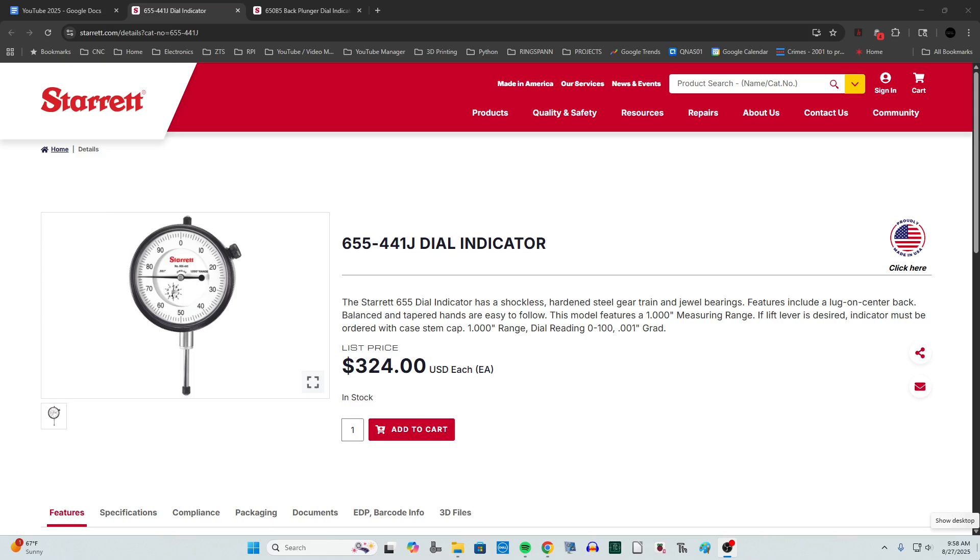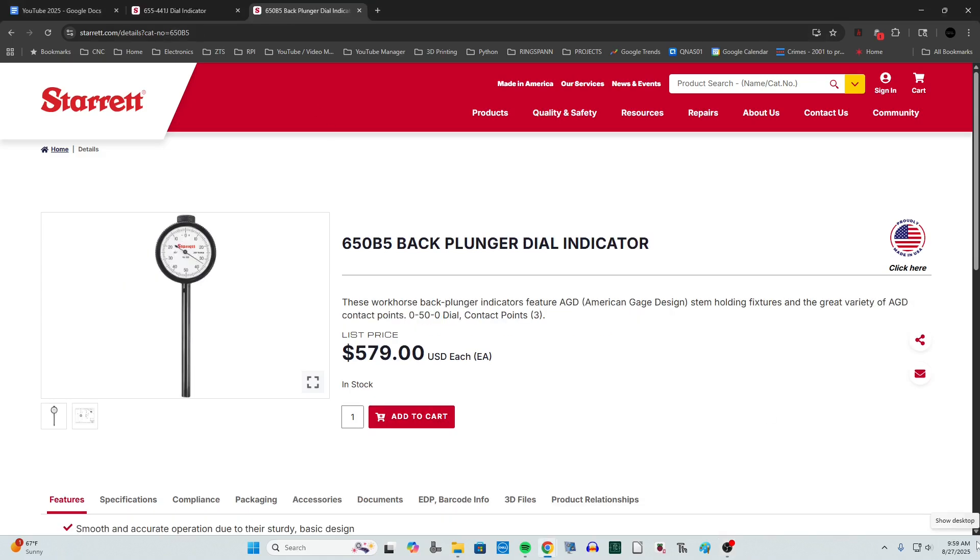For a quick price comparison, I went to the Starrett website, which is a leading manufacturer here in the United States. This particular dial indicator is very similar to the model I was showing you with one inch of travel and a dial reading of zero to one hundred with a one thousandths of an inch graduation. Price, $324 US dollars. This is the closest match to my back plunger dial indicator I showed you a moment ago. It lists for $579 and it has a 0-50-0 dial with a one thousandths resolution and 0.2 inches of travel.